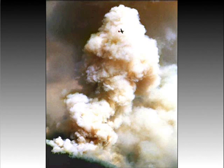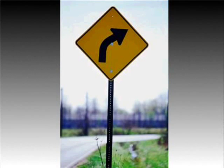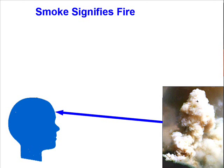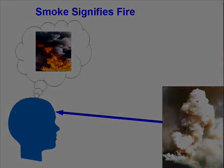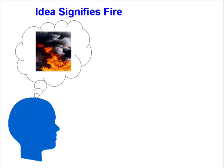Let's think about how smoke signifies fire. Before smoke can signify fire, we have to recognize that it is smoke — that it is not a cloud or a dust storm on the horizon. In the same way, when we see a road sign, we have to grasp that the diamond is a road sign and grasp the figure in order to know that it signifies the road is going to turn ahead. So for external or instrumental signs to signify, it is essential that we first grasp what they are in themselves — smoke or a road sign — before they can signify what they refer to.